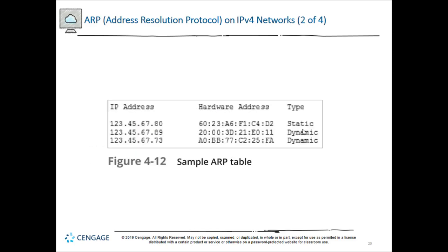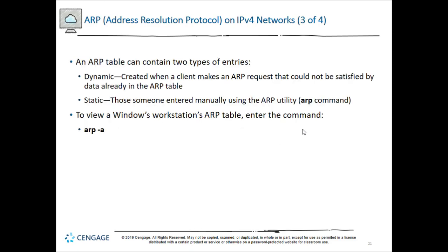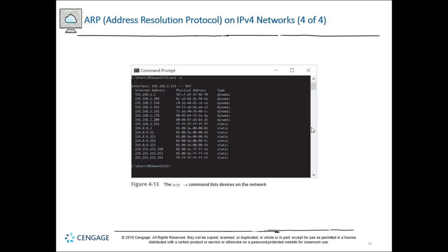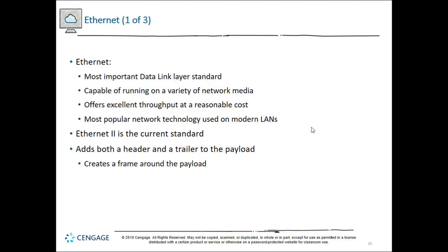ARP is essentially a mapping of IP addresses to MAC addresses. An ARP table can contain two types of entries: dynamic, which are learned, and static, which are manually entered. If you open a command prompt and type 'ARP -A', it will show you the mappings of MAC addresses to IP addresses that your computer currently knows about.